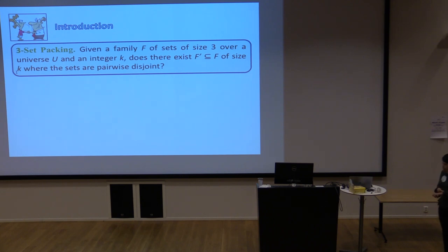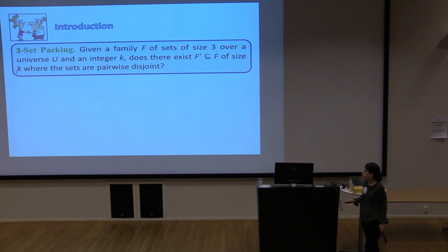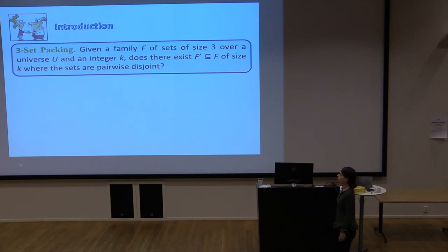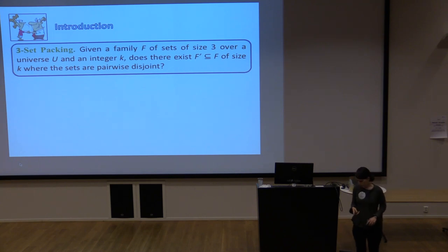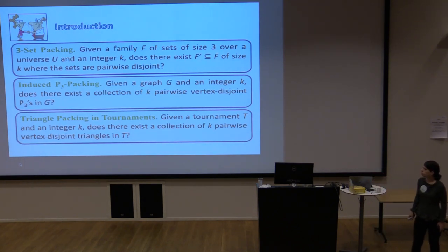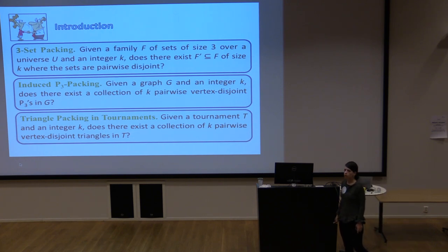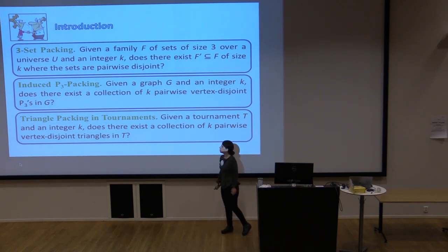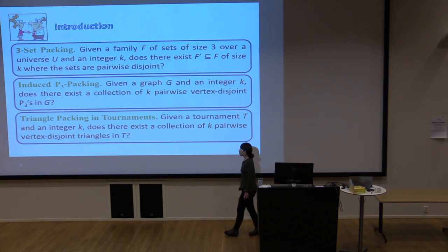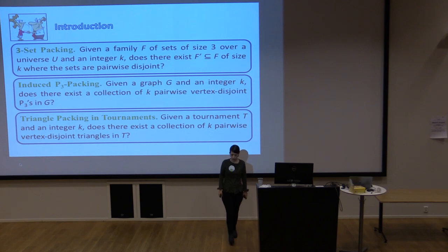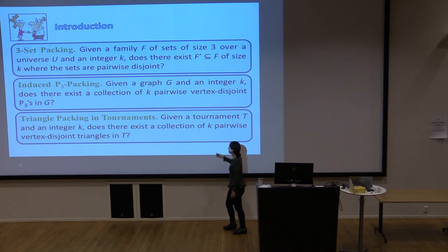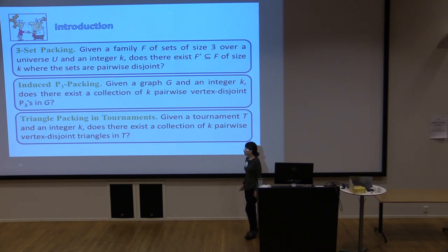We also looked at 3-Set Packing and corresponding problems that can be cast as special cases of it. In 3-Set Packing, you are given a family F of sets of size 3, a universe U, and an integer k, and you ask whether there exists a sub-family of F of size k where the sets are pairwise disjoint. The analogous problems are induced P3 packing — given a graph G and integer k, find k pairwise vertex-disjoint induced P3s — and triangle packing in tournaments, finding k vertex-disjoint triangles.